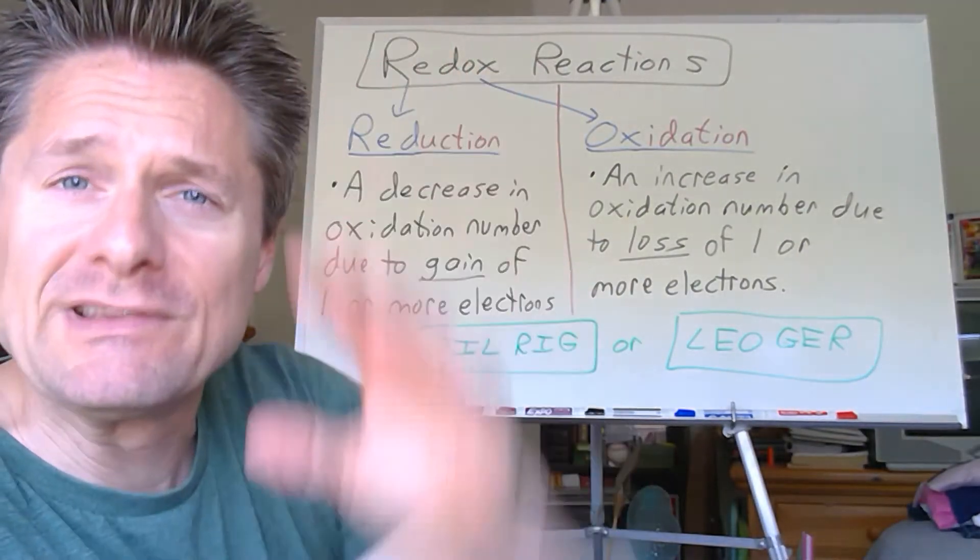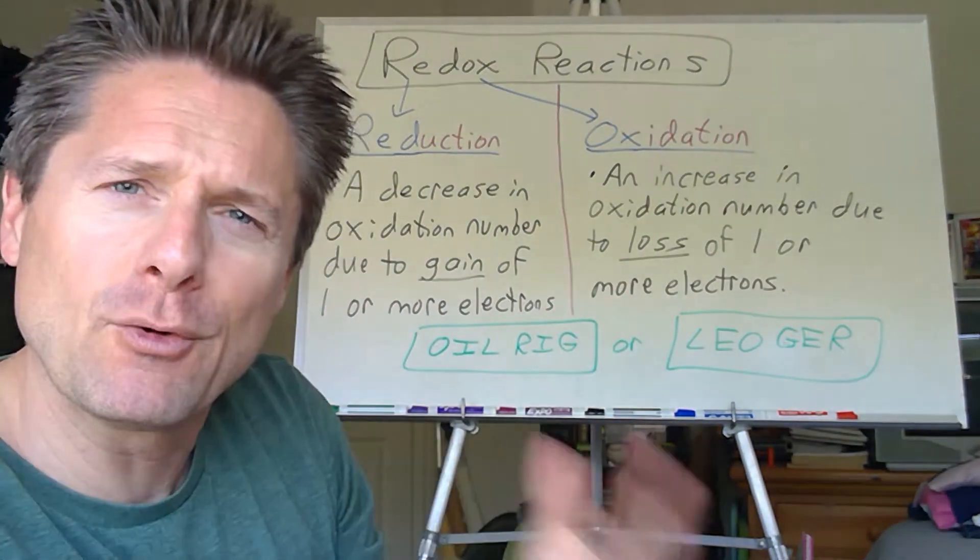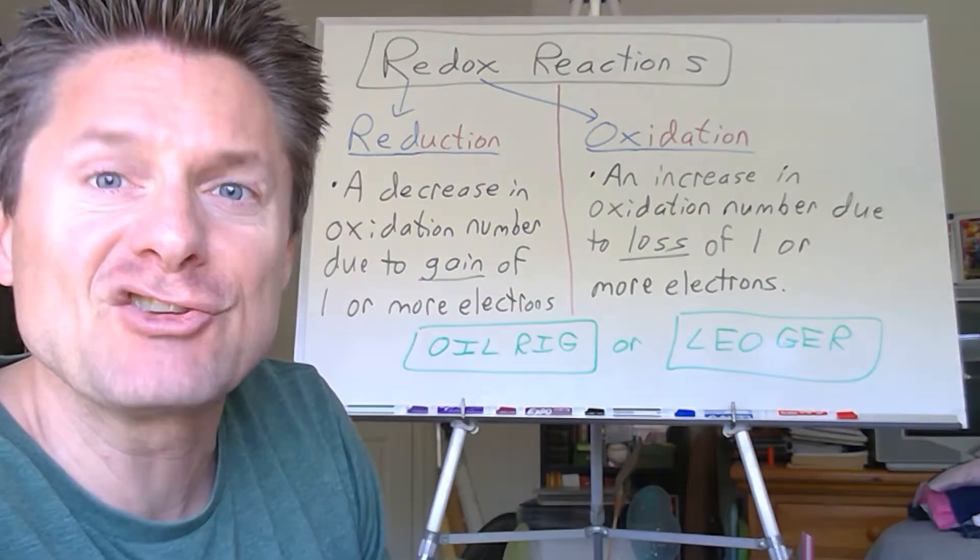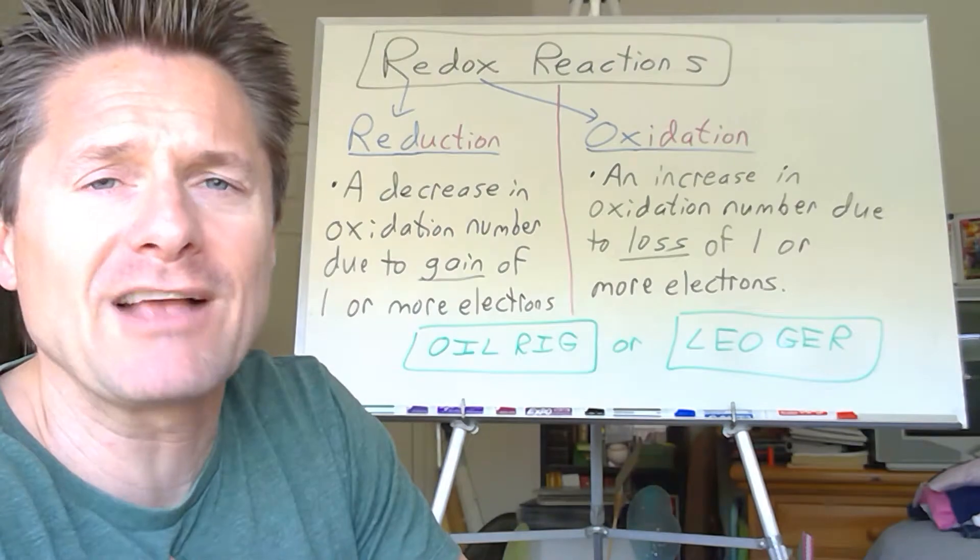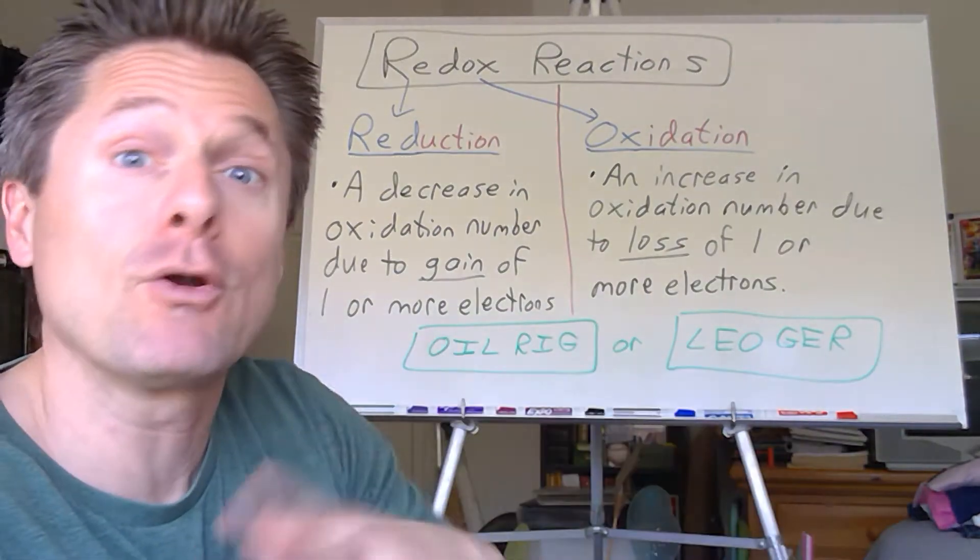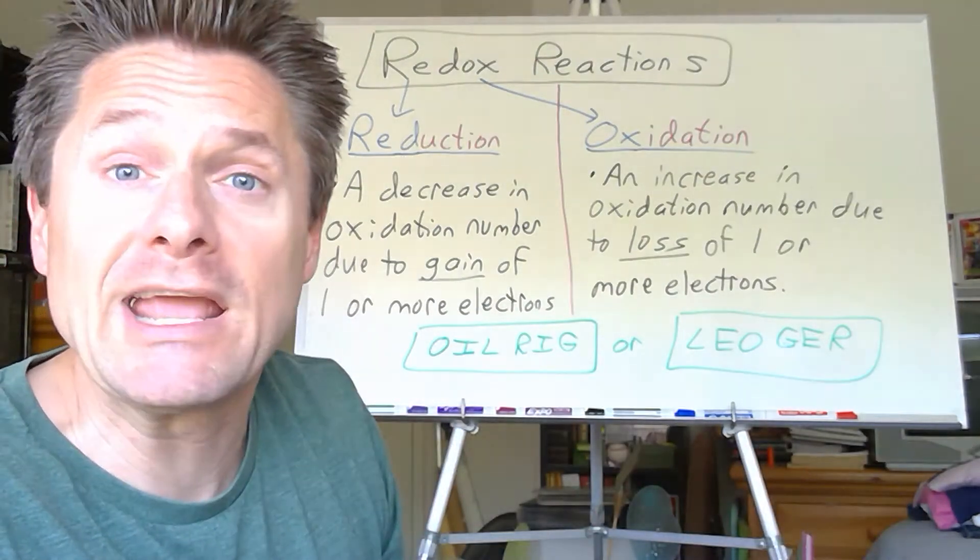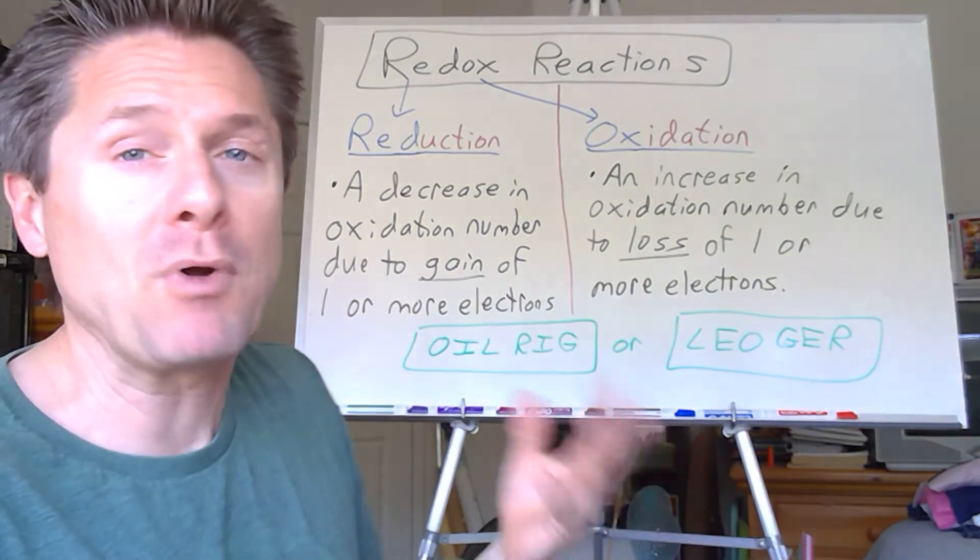Here we go. So reduction, of course, means to go down. Oxidation, not so intuitively obvious, to go up. Depends if you're an organic chemist versus a general chemist. We look at oxidation a little bit differently. But as a general chemist, we look at reduction and oxidation as electron gain or electron loss, because electrons are negatively charged. So if I lose an electron, I'm losing a negative charge. If I gain an electron, I'm gaining a negative charge.